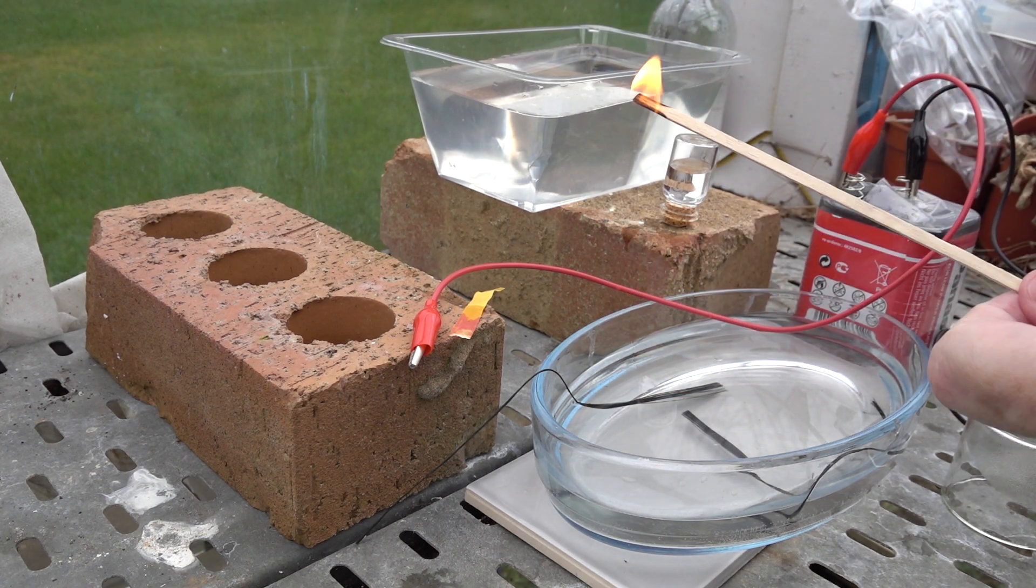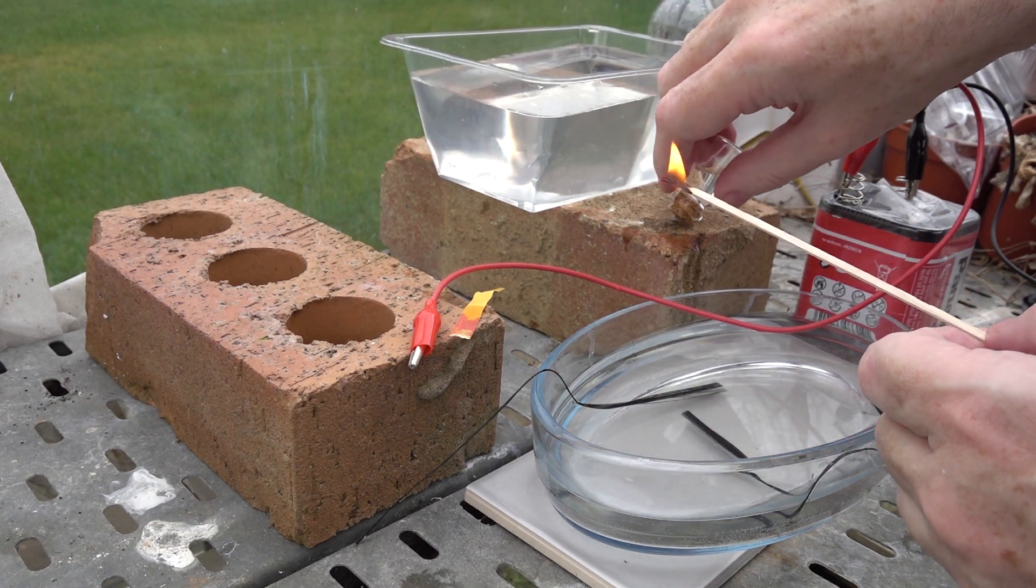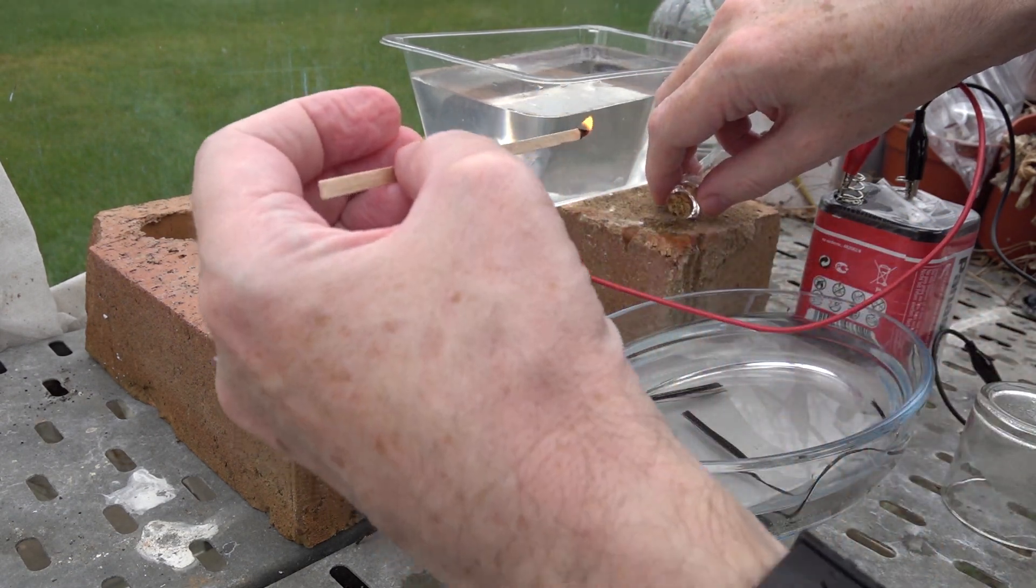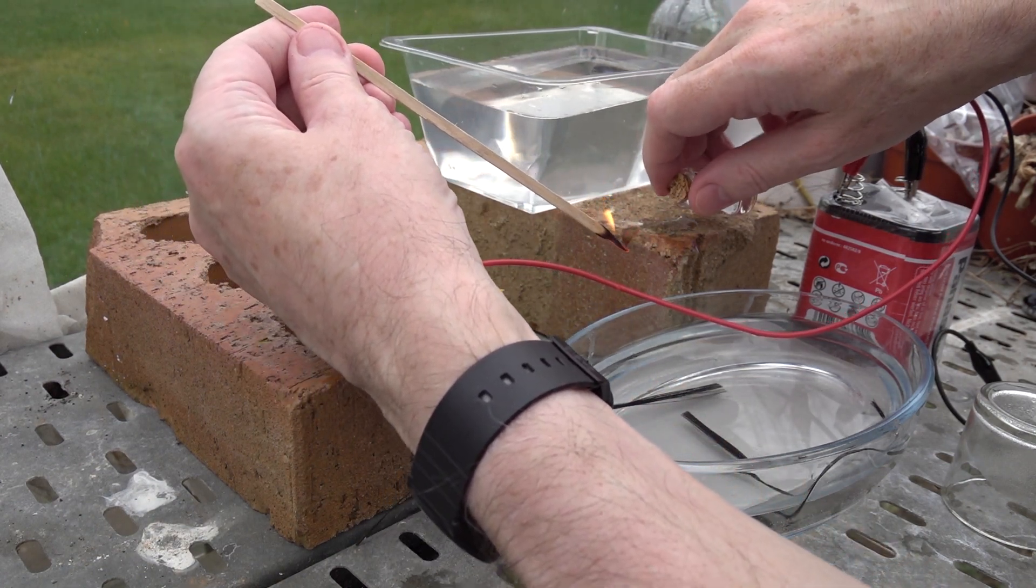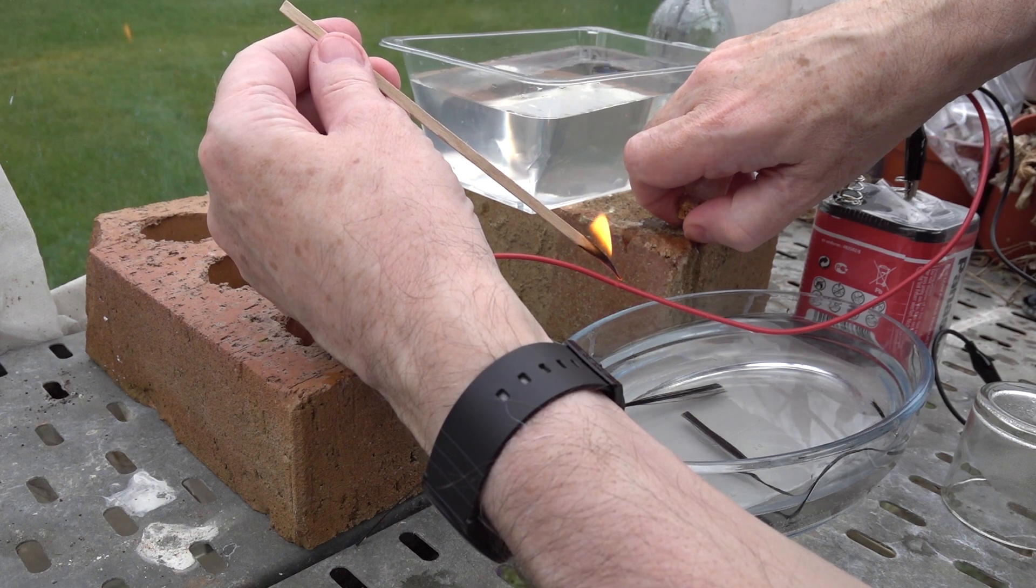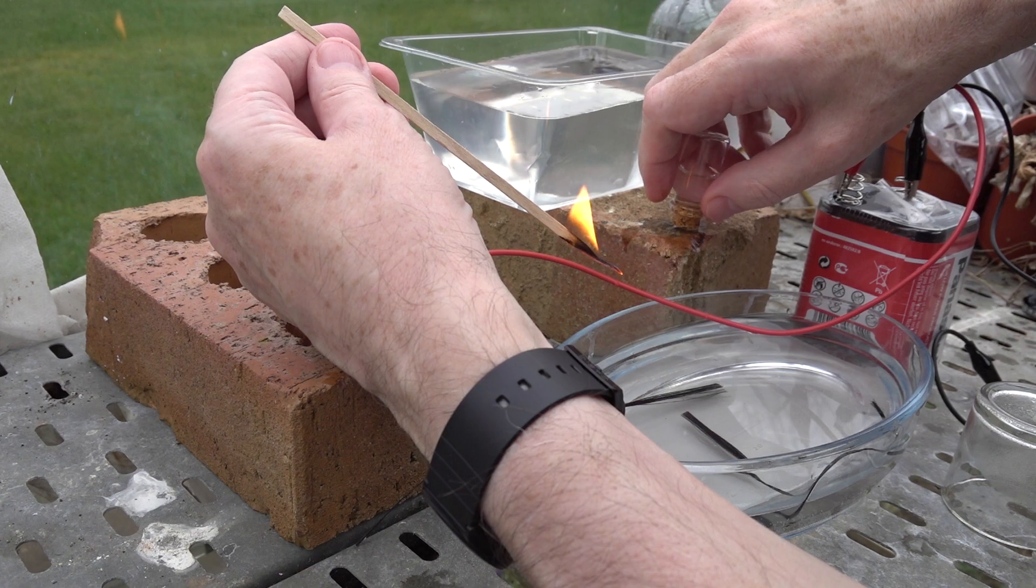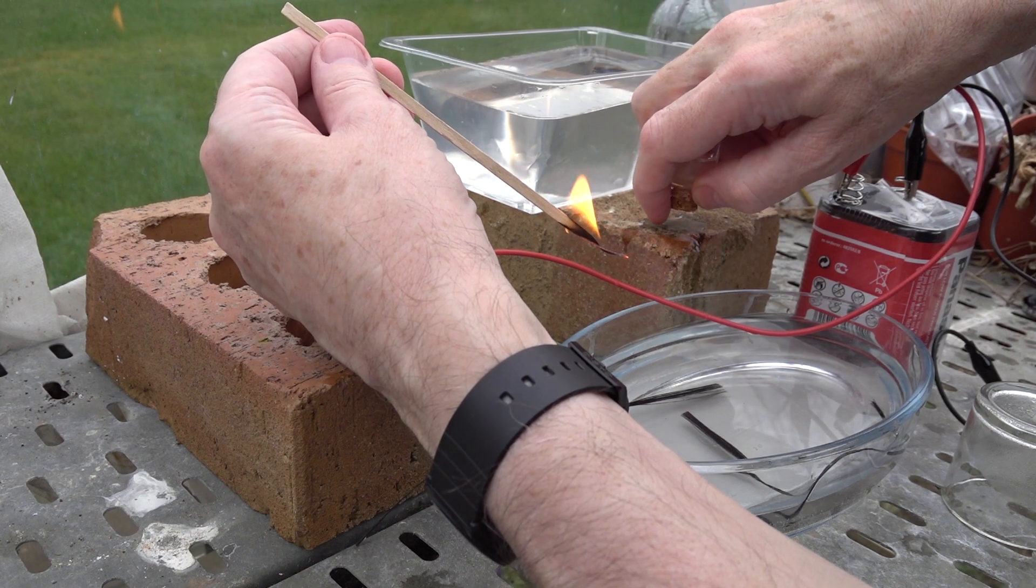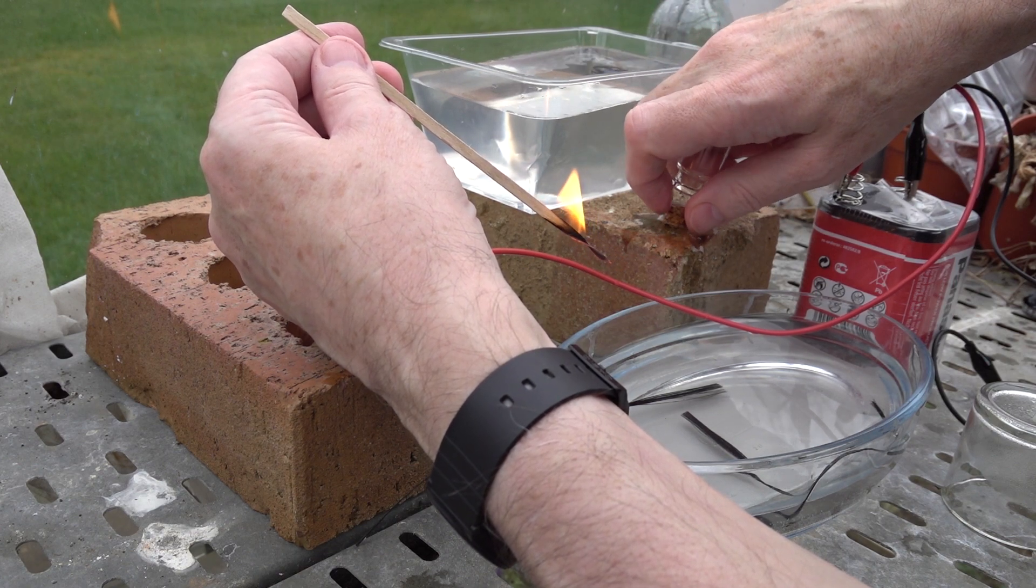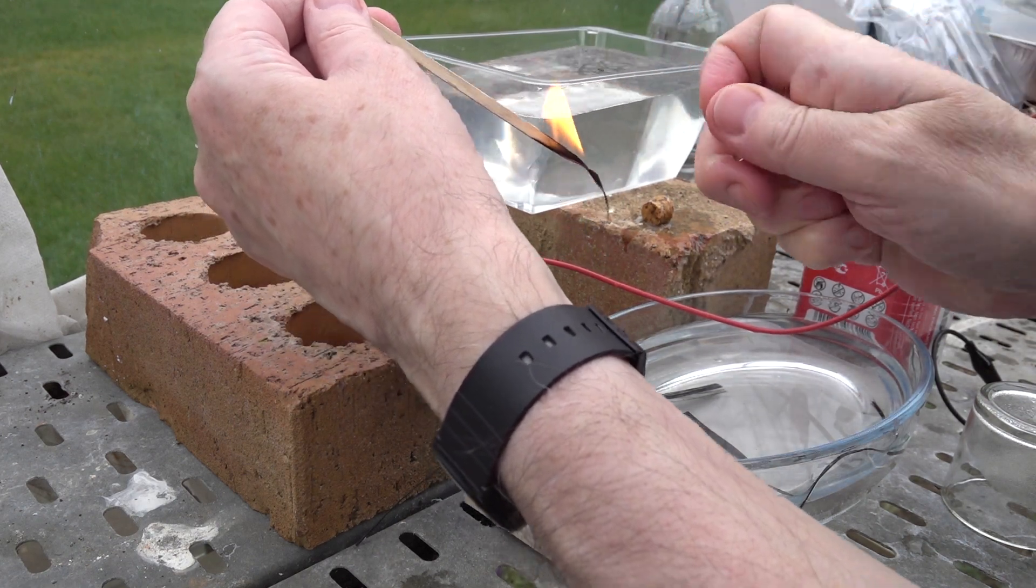So one lit splint and now we've got to test the gas with the splint here. If I take the cork out slowly the water will run out and then the gas should remain in the tube with air that replaces the water. So I'll put my finger over the end and here's the test.